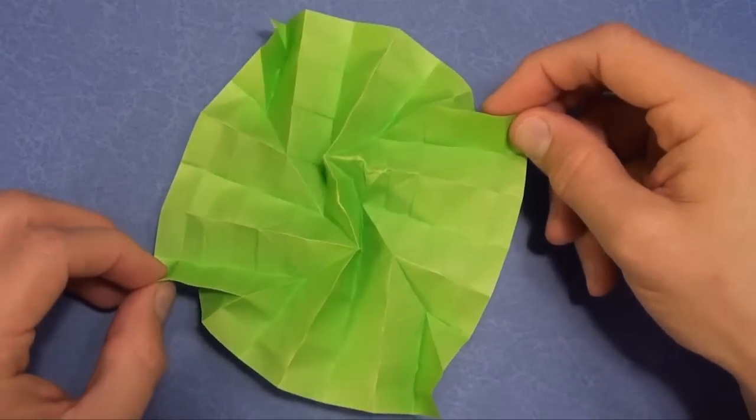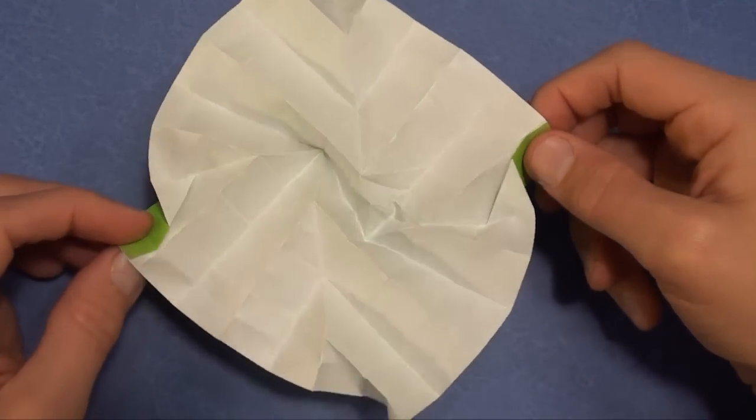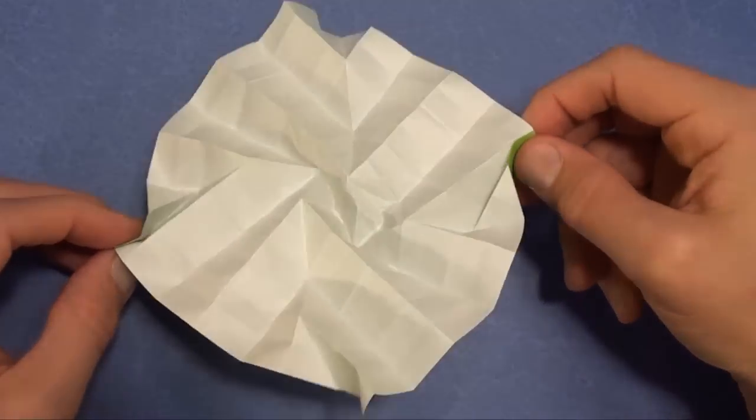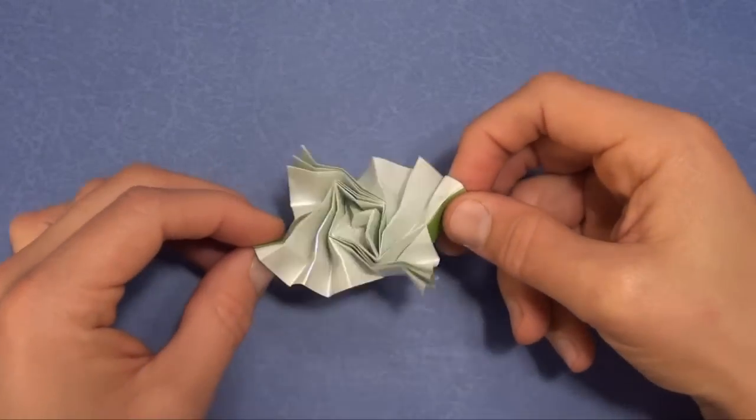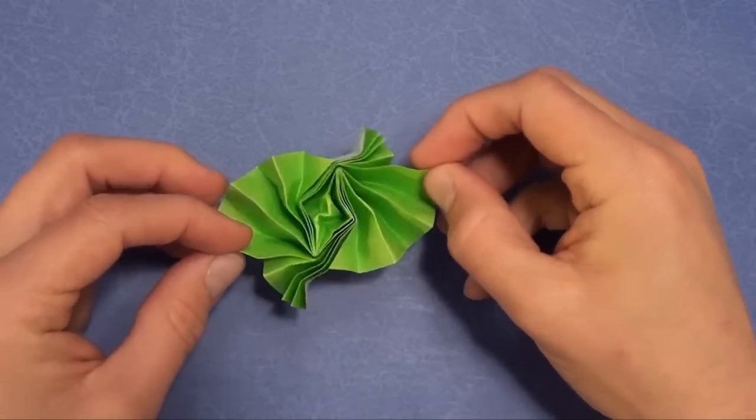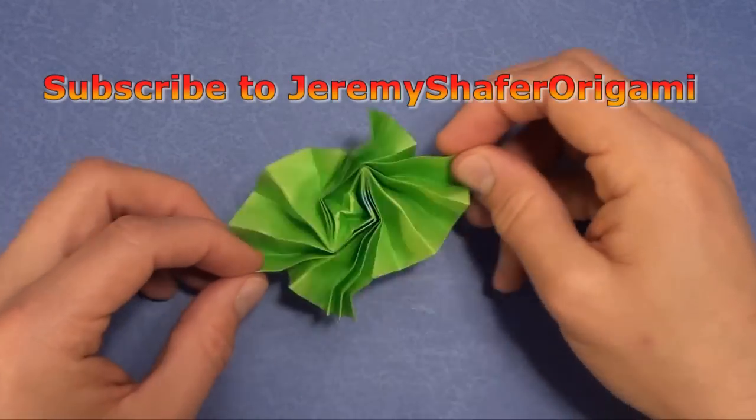And it's iso area. Because look. It's the same on the other side. Except that it opens going counterclockwise. And there you have it. The basic iso area flasher. This is Jeremy Schafer. From Jeremy Schafer Origami. Thanks for watching.